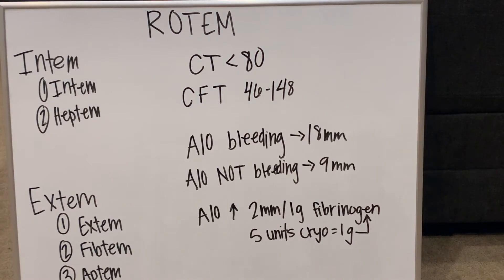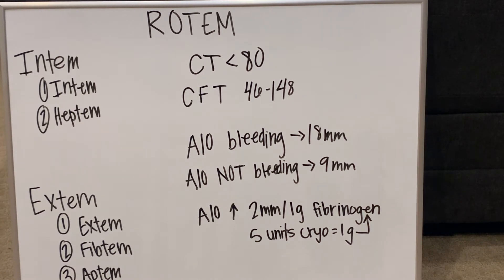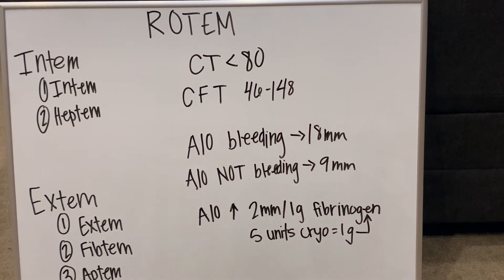This is where the A10 comes into play. To get an accurate A10 number, you want to look at the Fibtem. In this patient, the A10 level is 15. You need to know if your patient is hemorrhaging or not. If the patient is not bleeding and the A10 is 9 or greater, you don't need to give cryo — it means you're not fibrinogen deficient. But if the patient is bleeding, you want the number to be 18 or greater. A good rule of thumb is that A10 increases 2 mm for every 1 gram of fibrinogen, and 5 units of cryo equals 1 gram. So if this patient was bleeding and we're at 15, we'd want to give at least 10 units of cryo to increase that above 18.